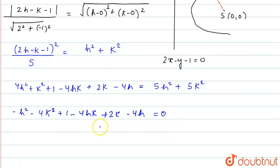Now, taking this to the right hand side or multiplying the equation by minus 1, the equation will become h squared plus 4k squared minus 1 plus 4hk minus 2k plus 4h equals 0.